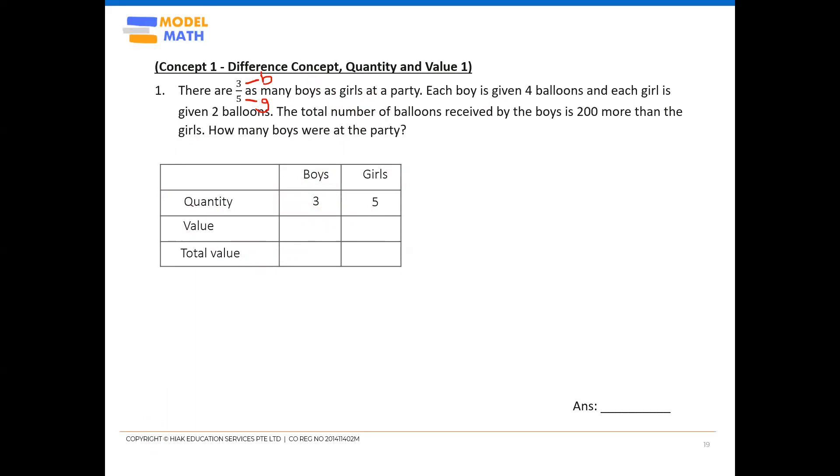Now, value, moving on to value. What does value mean? Value in this case is the balloons, because the children carrying the balloons. In fact, to be clear, this is the balloons per person, balloons per child. That means each boy carries how many balloons. What we know from the question is each boy carries four balloons, whereas each girl carries two balloons.